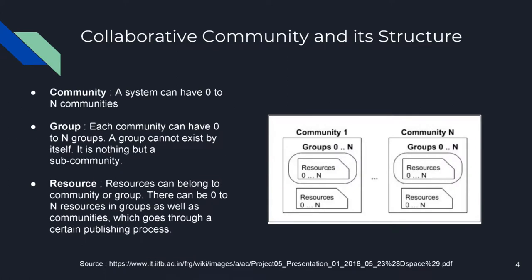Before understanding the mapping of collaborative community and DSpace, we first need to understand the structure of collaborative community. Collaborative community consists of communities, groups and resources. A system can have 0 to N communities, each community can have 0 to N groups, and communities and groups can have 0 to N resources.